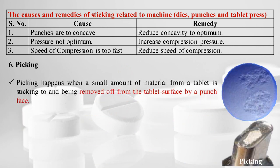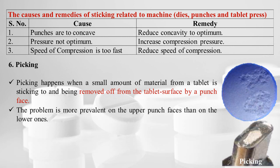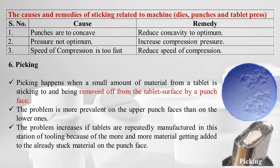Picking happens when a small amount of material from the tablet surface is removed by the punch face. This problem is more prevalent on upper punch faces. The problem increases if tablets are repeatedly manufactured at the same station of tooling, because more and more material gets added to the already-stuck material on the punch face.